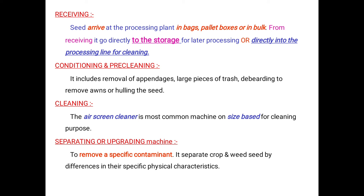The second step is conditioning and pre-cleaning. Pre-cleaning includes the removal of appendages, large pieces of trash, deburring, removing awns, or hulling seeds. For the cleaning step, the air screen cleaner is the most common machine; it separates seeds according to size and is best for cleaning purposes.